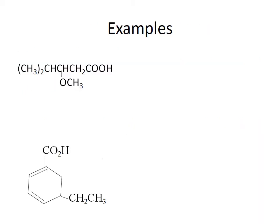Here are some examples of nomenclature. Remember that the acid functional group has priority over aldehydes, ketones, ethers, alkenes, and alcohol groups. The number one carbon is always the acid functional group.